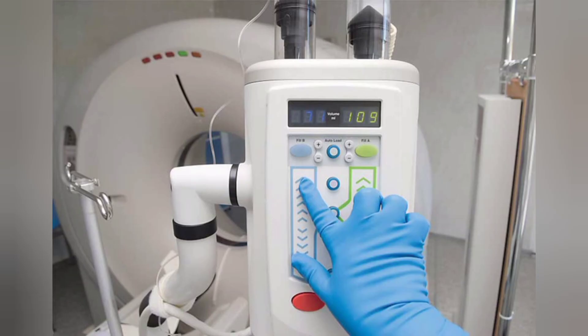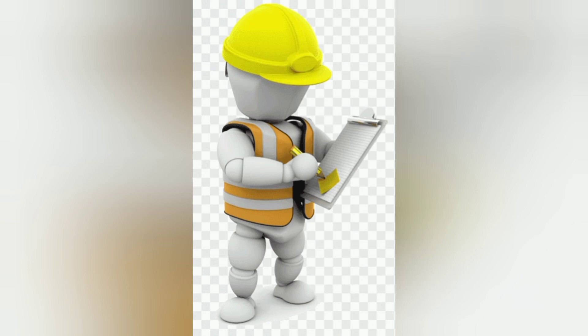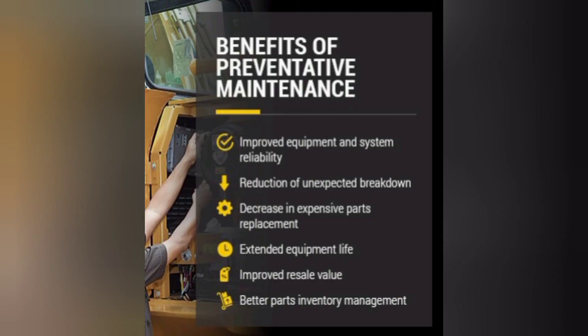After closing, do the functional testing of the machine. Make a report of the maintenance. In the report, include your key observations about the equipment and do not forget to note any suggestions for the user if needed. After writing everything in the report, take the signature of the sister in-charge or any other accountable person of that department. Now the preventive maintenance procedure is complete — store this report in your record file.